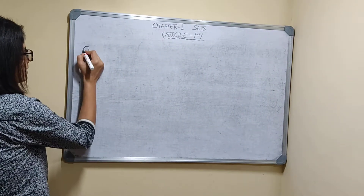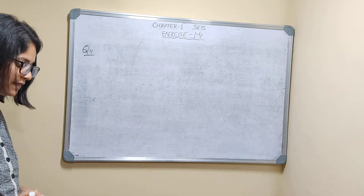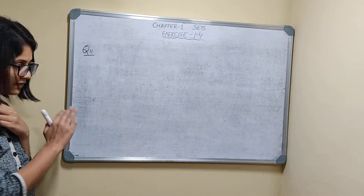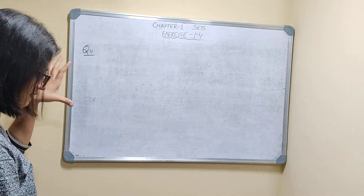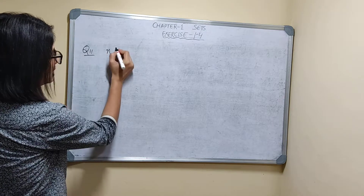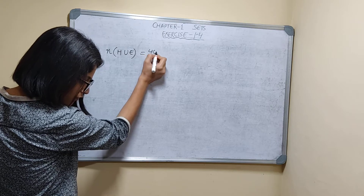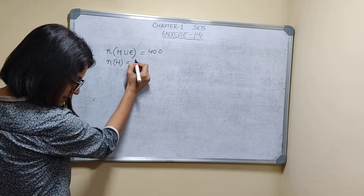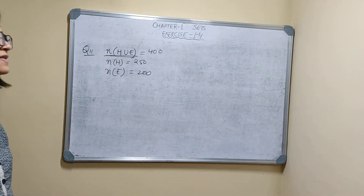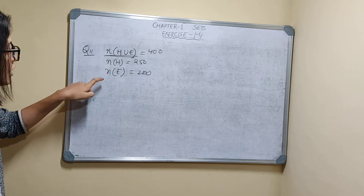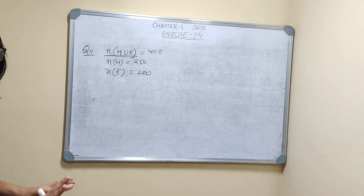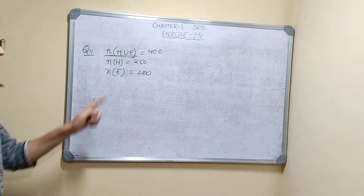Question number 11. In a group of 400 people, 250 can speak Hindi and 200 can speak English. How many can speak both Hindi and English? They are not discussing that any student can speak neither Hindi nor English — not a single student is there who can't speak either language. That's why this is H∪E, not a universal set.